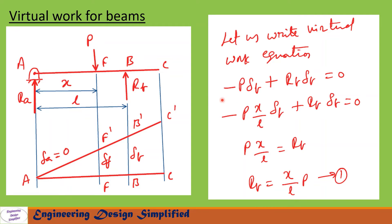Now let us write the virtual work equation: −P · delta_F + Rb · delta_B = 0. The minus sign is because delta_F is in the upward direction and P is in the downward direction; the plus sign is because Rb and delta_B are both upward. Substituting delta_F = (x / L) · delta_B and simplifying, we get Rb = (x / L) · P. Let us call this Equation 1.